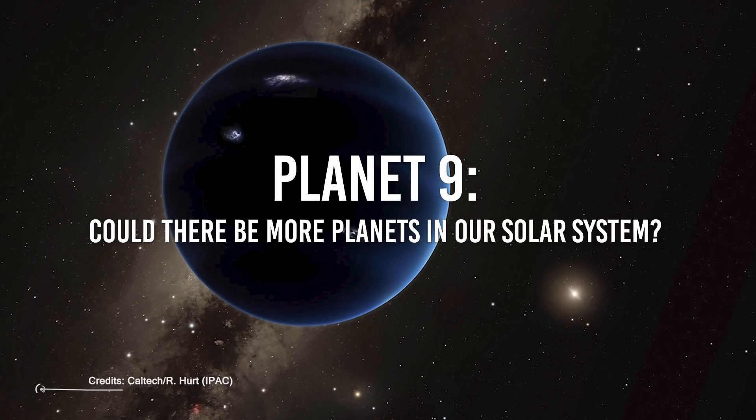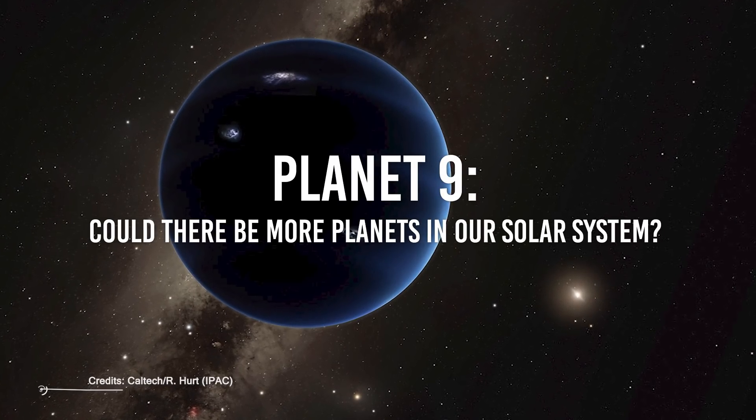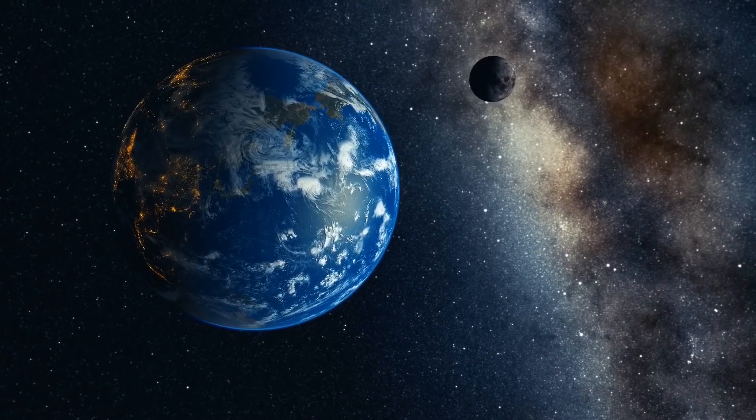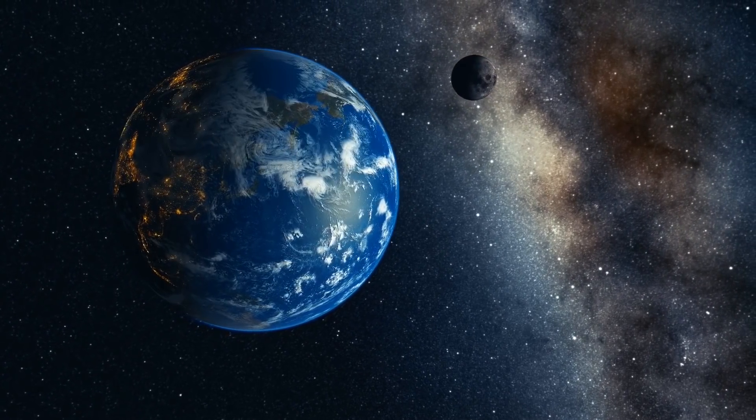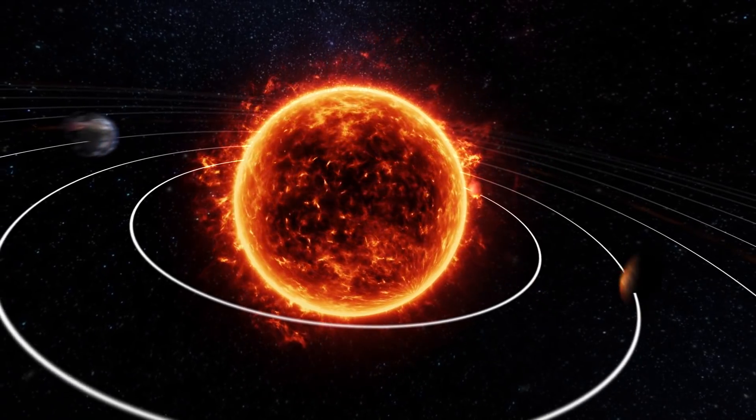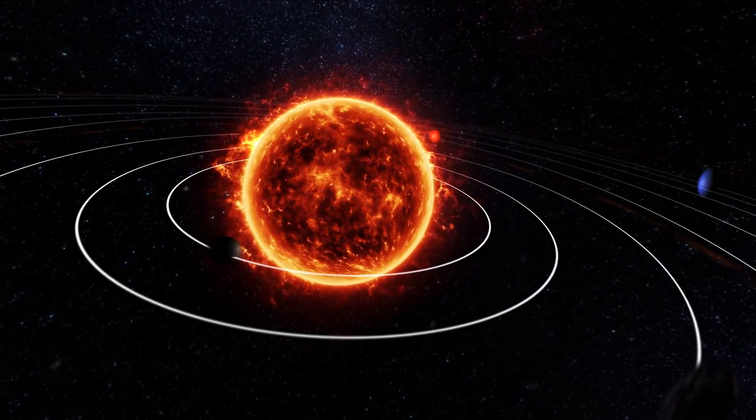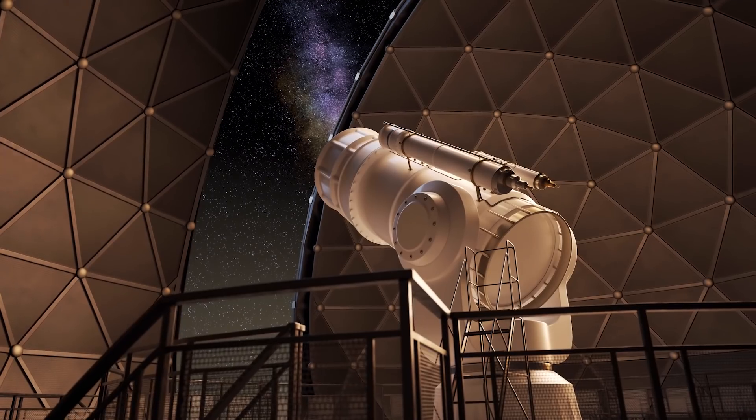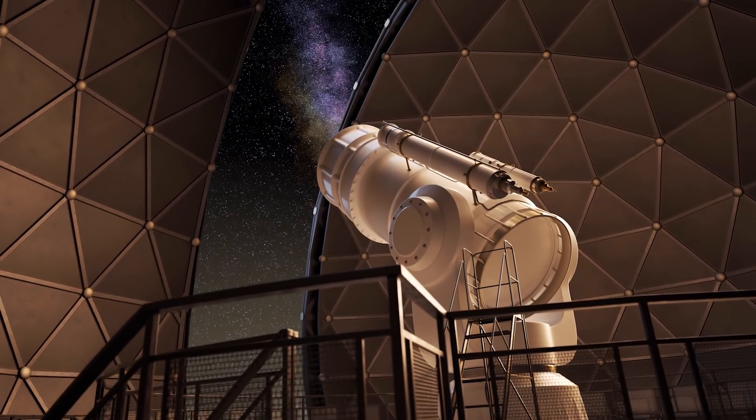Planet 9. Could there be more planets in our solar system? Planet 9 is a hypothetical planet larger than Earth, far beyond Neptune's orbit in the darkest and farthest corners of the solar system. But could there be such a giant planet in our solar system that we haven't yet discovered? How could such a big planet hide from our most powerful telescopes? Stay tuned to find out!